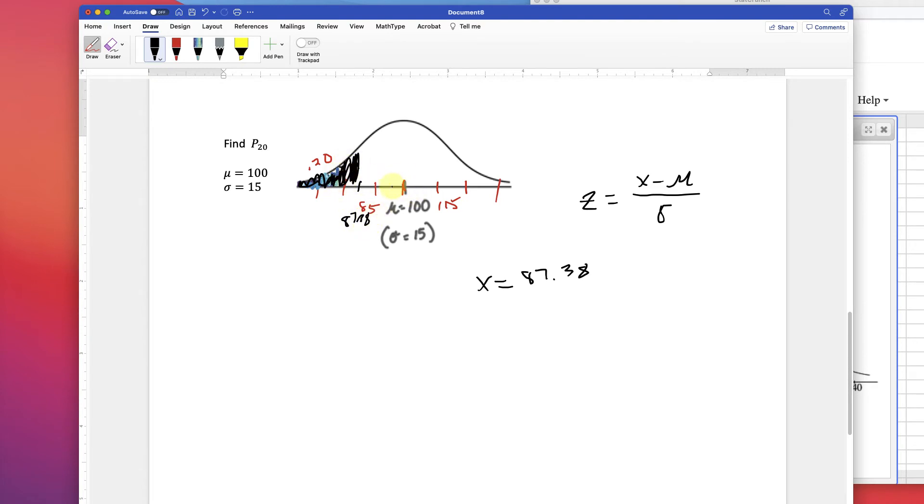And it makes sense because the 20% is obviously going to be less than the mean, considerably. And so that would be the x value that gives you this shaded area.